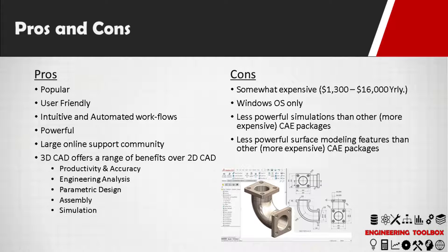You're going to be paying anywhere from $1,300 to $16,000 annually depending on how you do your licensing, how many users you have, and also what level or package you purchase. Another downside to SOLIDWORKS is it's only available on a Windows operating system — it's not available on Mac. Although it is very powerful in terms of simulation, there are other dedicated simulation softwares out there that are more powerful and feature-rich. Also, SOLIDWORKS doesn't have the surface modeling systems and tools that other CAD packages like CATIA might — although CATIA is also owned by Dassault Systems.